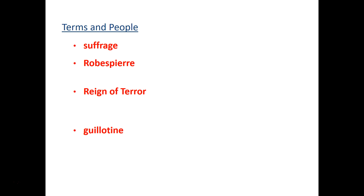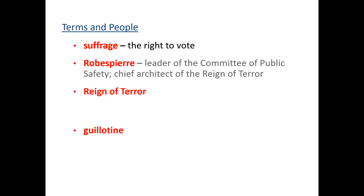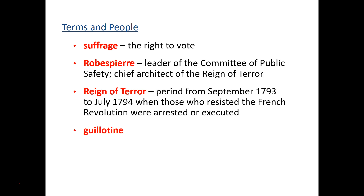All right, a quick review of key terms from this section. Suffrage is the right to vote — at one point all male citizens had suffrage, but then we see a step back with the Directory where only men with property qualify. Maximilien Robespierre was the leader of the Committee of Public Safety and the chief architect of the Reign of Terror; he himself was executed in 1794. The Reign of Terror, from 1793 to July 1794, was the period when anyone who resisted — or was even suspected of resisting — the Revolution was arrested and executed.